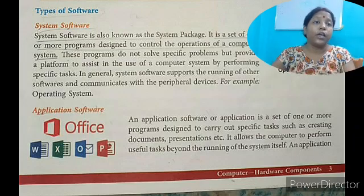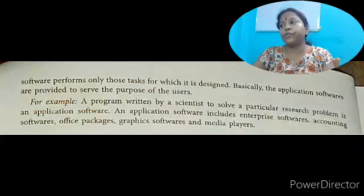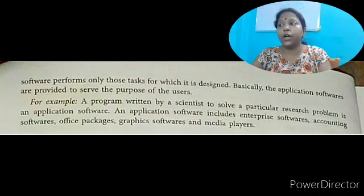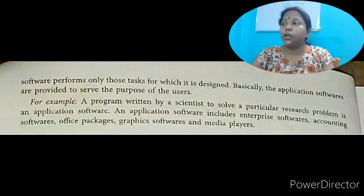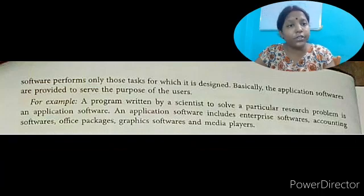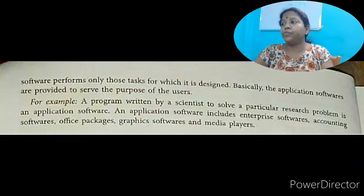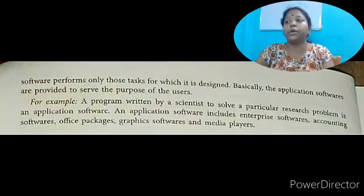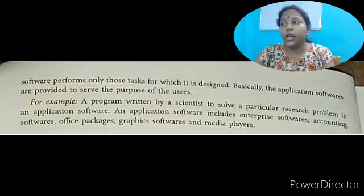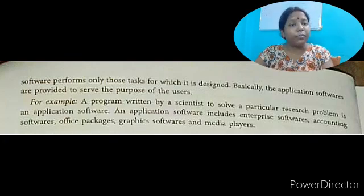The function of application software is to perform some specific task, while the function of system software is to control the operation of the computer system. Application software performs only those tasks for which it is designed, basically to serve the purpose of the user. For example, a program written by a scientist to solve a particular research problem is an application software. Application software includes enterprise software, accounting software, office packages, graphic software, and media players.